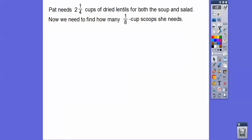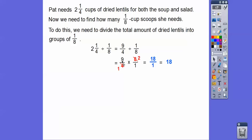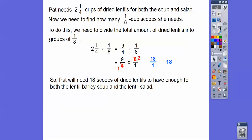Now we need to find how many one-eighth cup scoops Pat needs. We take that total and divide it by one-eighth: two and one-fourth divided by one-eighth. Changing to an improper fraction — four times two is eight, plus one is nine — so nine-fourths divided by one-eighth. We do keep, change, flip: keep nine-fourths, change to multiply, flip to eight over one. Four goes into four once and into eight twice, so we get nine times two over one, which is 18. Pat will need 18 scoops of dried lentils for both the lentil barley soup and the lentil salad.